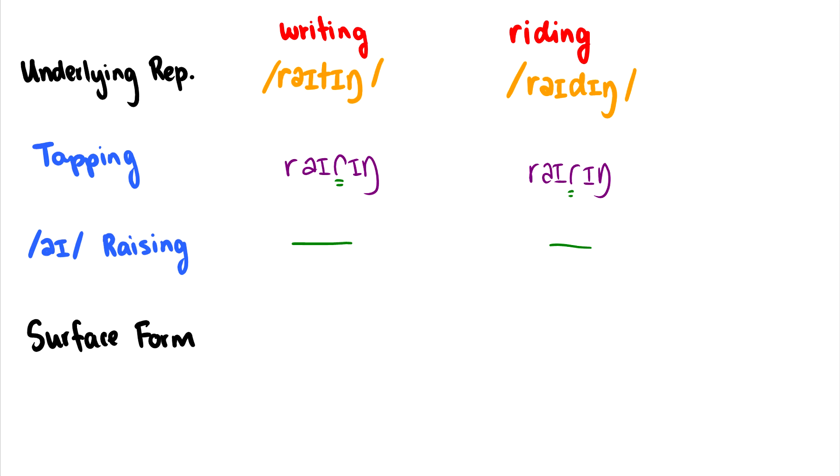Which means that these rules do not apply to either of these words, which means that the surface form for both of these words are just going to be writing. So whether we start with the underlying representation for writing or riding, we're going to get the same pronunciation for both of these by switching the order of the rules.